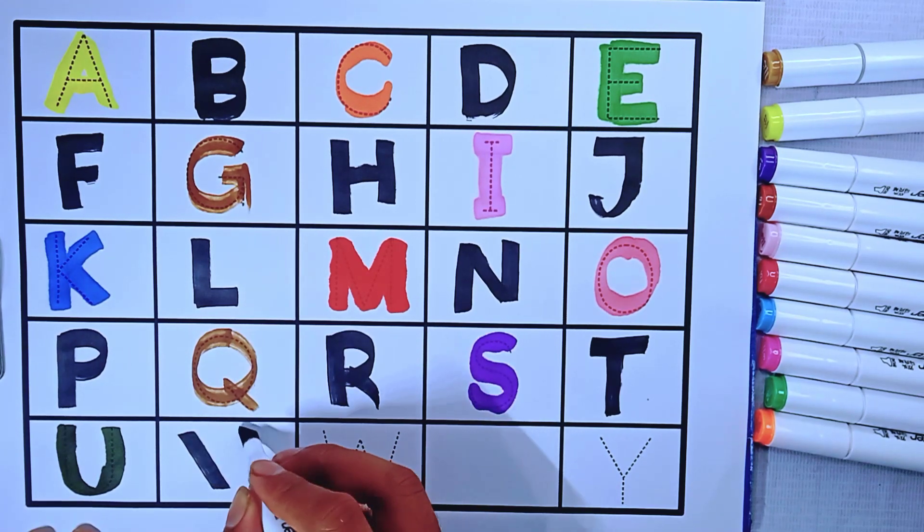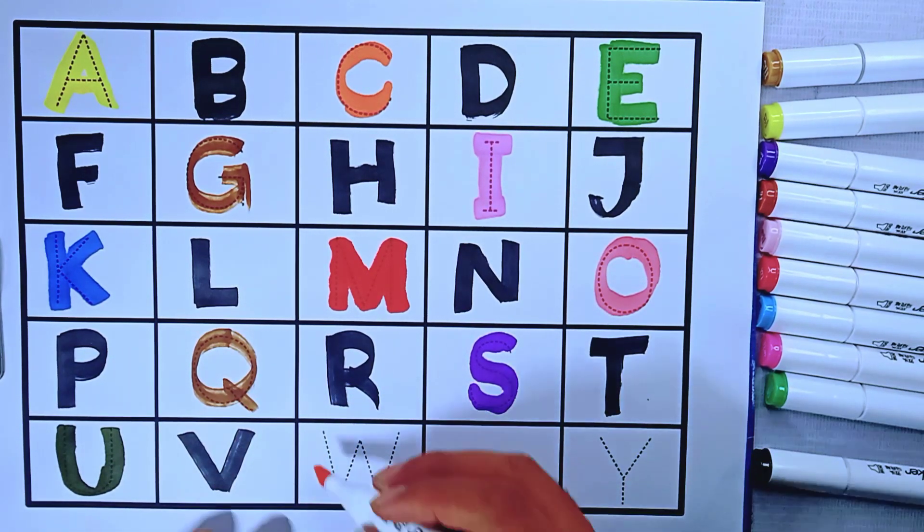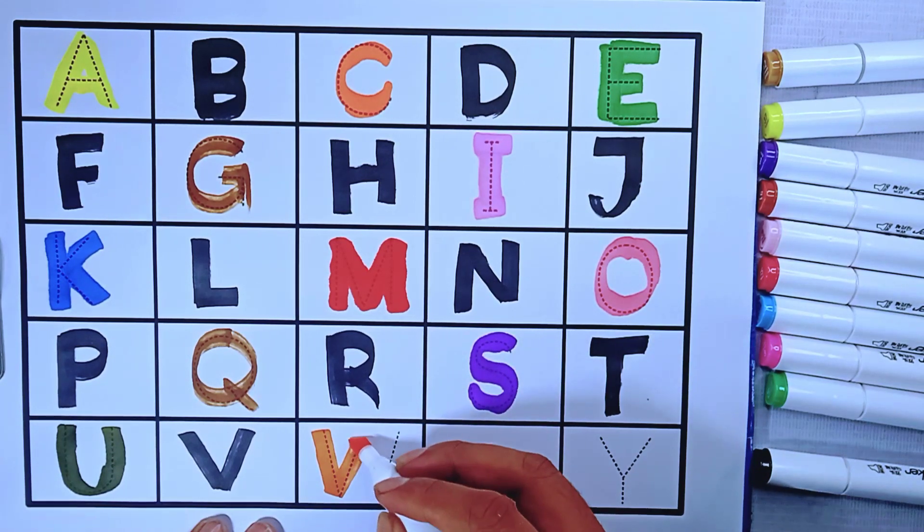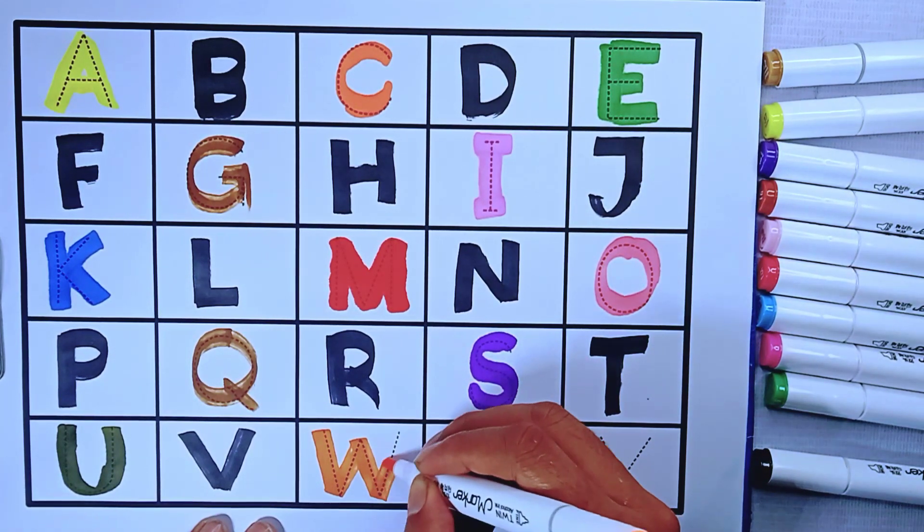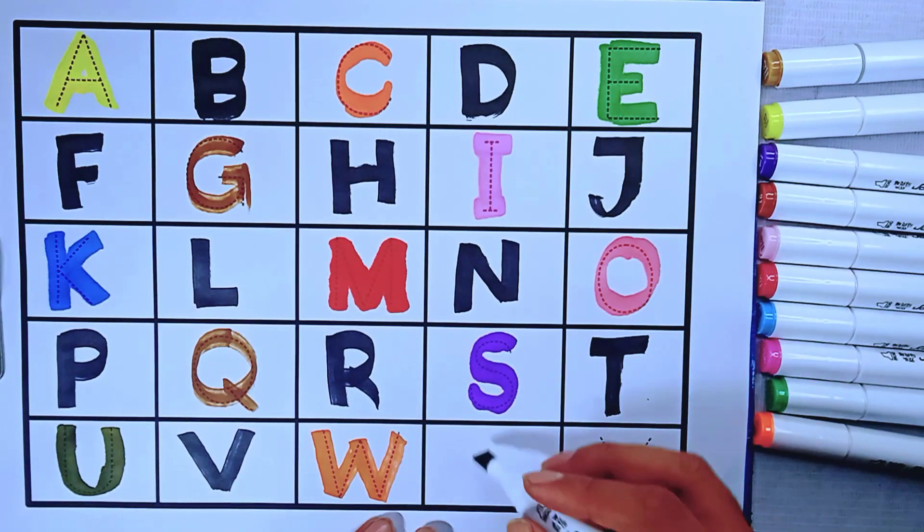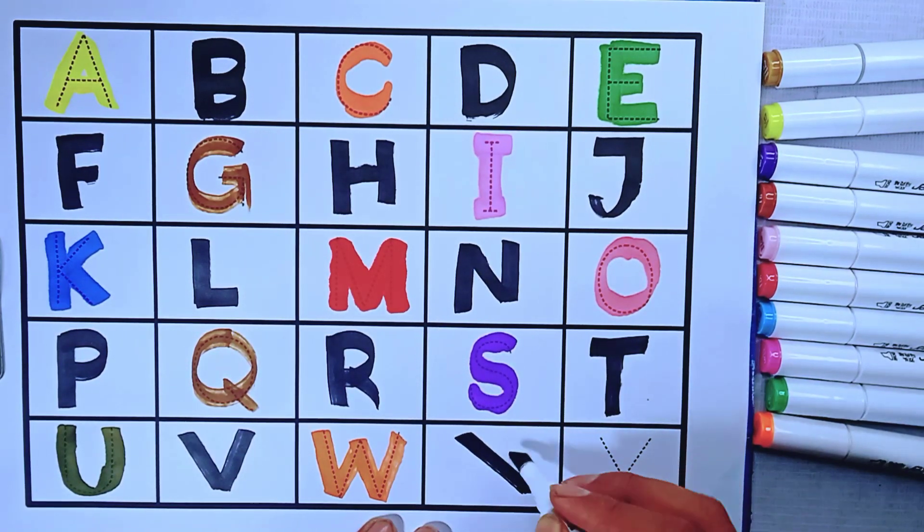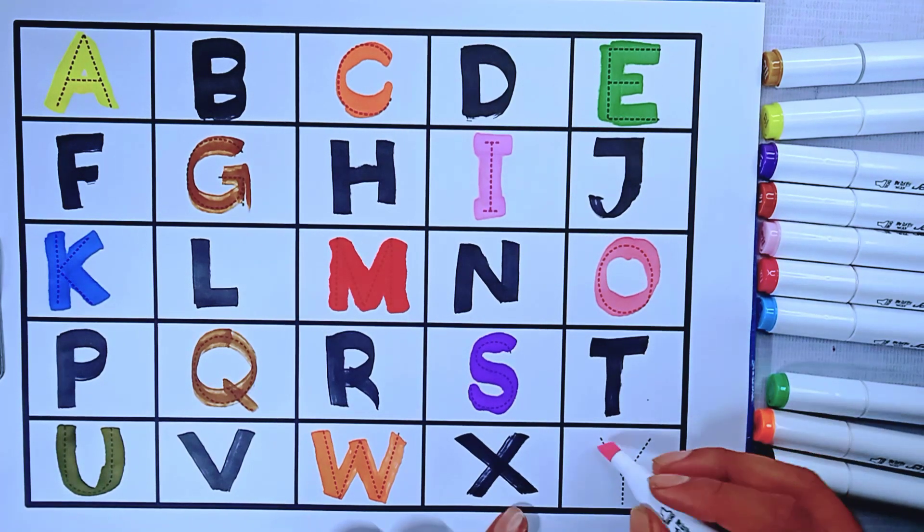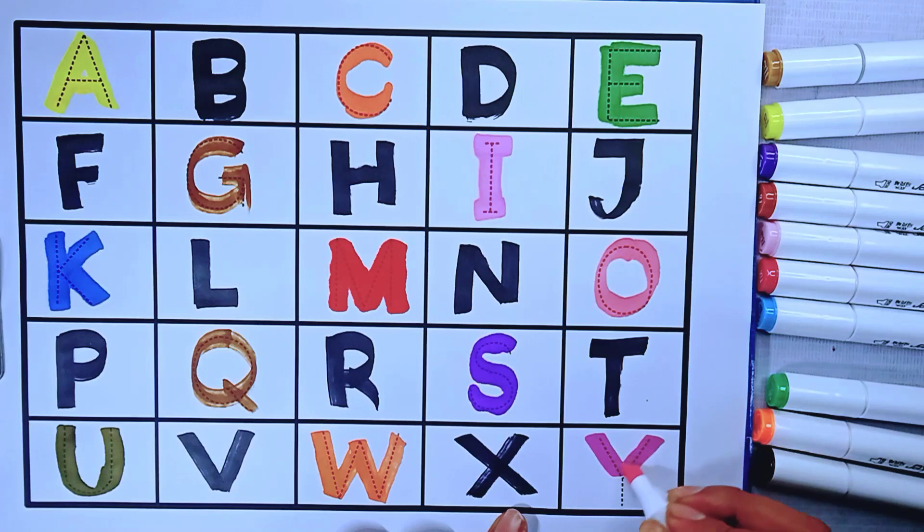V is for Van, W is for Water, X is for X-ray, Y is for Yellow.